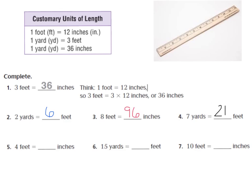For number 5, you should have said 4 feet equals how many inches? I know in 1 foot it's 12 inches, so 4 feet times 12 would be 48 inches. Number 6 says 15 yards equals how many feet — I know 1 yard equals 3 feet, so the equation is 15 times 3, giving 45 feet inside 15 yards. For number 7, it's 10 feet equals how many inches — 10 feet times 12 inches gives 120 inches.